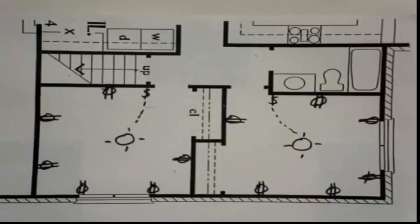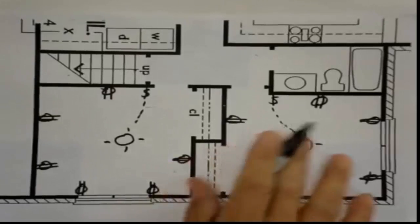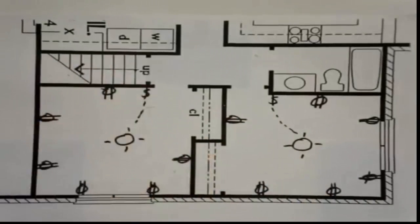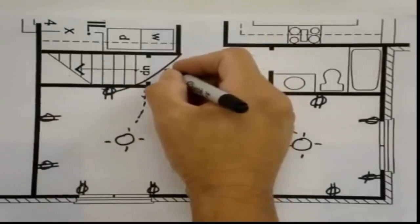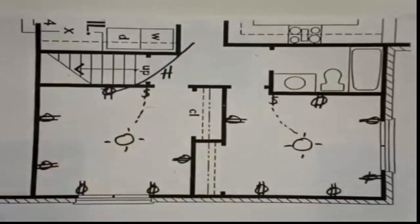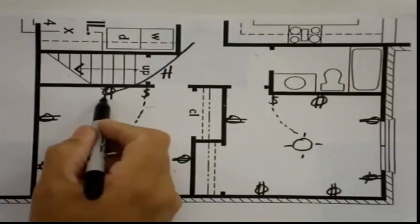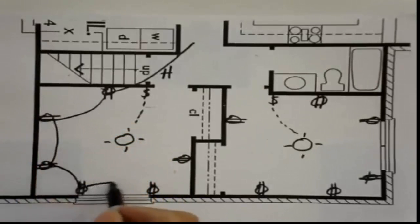Now we just need to hook it up to our main box. So how are we going to do this? We start with one particular place to our main box. In this case we're going to start right here and this will be our home run. We'll start right here and then we're going to hit every outlet.